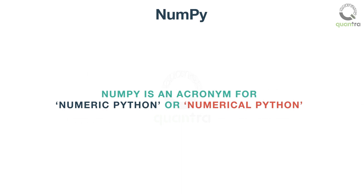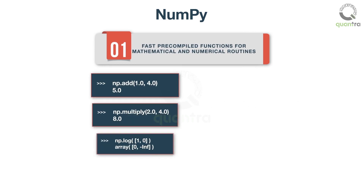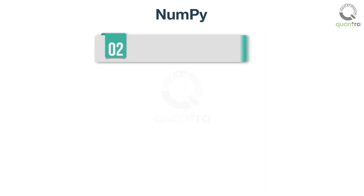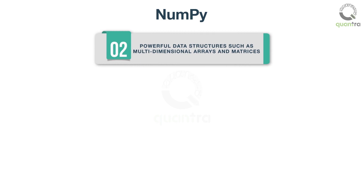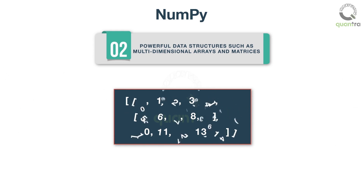NumPy is an acronym for Numeric Python or Numerical Python. It is an open-source extension module for Python. NumPy provides us with two major things: fast pre-compiled functions for mathematical and numerical routines on any variable or object, and it enriches the Python programming language with powerful data structures such as multidimensional arrays and matrices. Using NumPy, one can even manipulate these arrays and matrices to perform high-level mathematical operations on them.